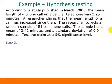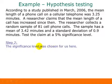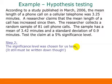We already found our null and alternative hypothesis. Now we're going to find our significance level. This was already chosen for us because the problem tells us to test the claim at a five percent significance level. For step two we write alpha equals 0.05.